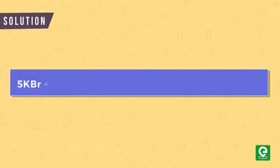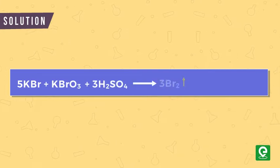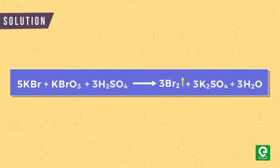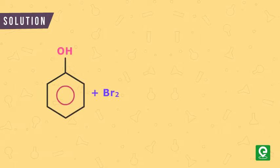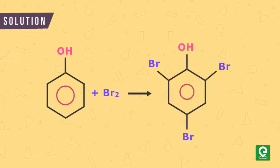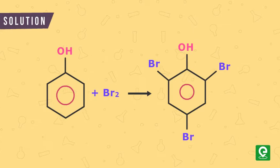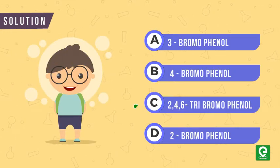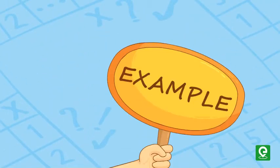When KBr and KBrO3 react in acidic medium, Br2 is released in the process. Br2 on reaction with Phenol gives 2,4,6-tribromophenol. Therefore, the correct option is C. Let's look at another example.